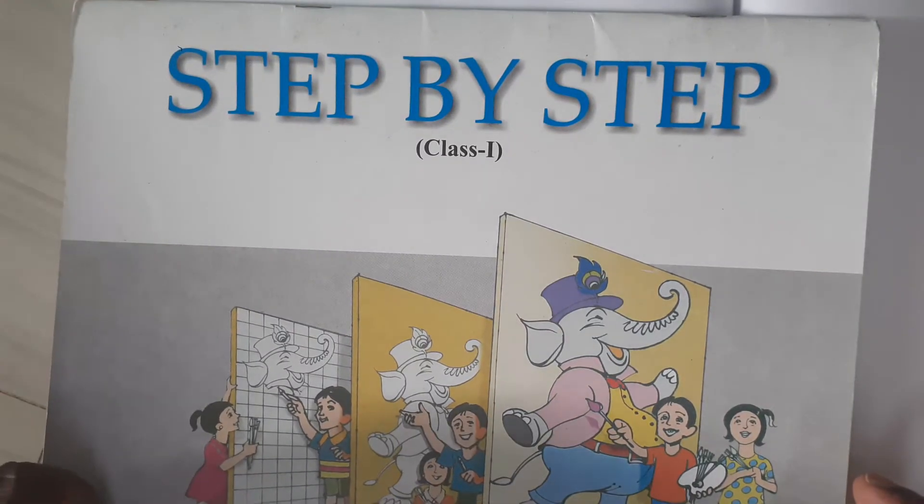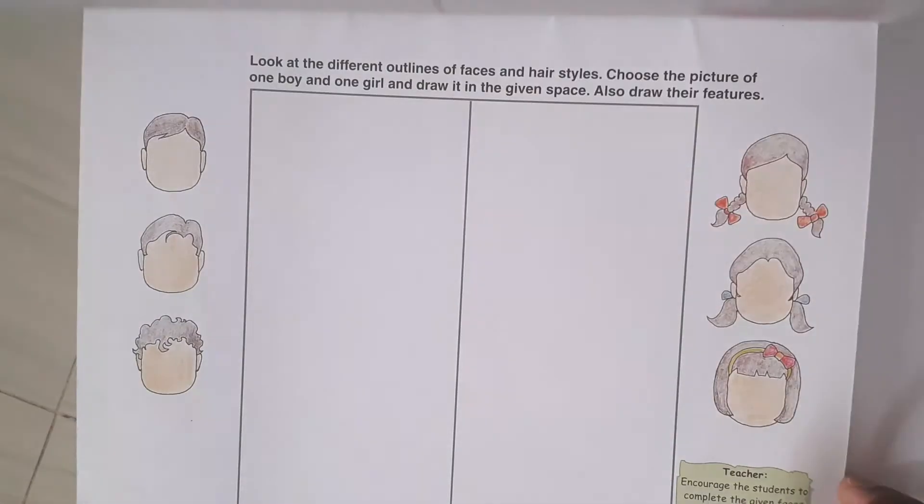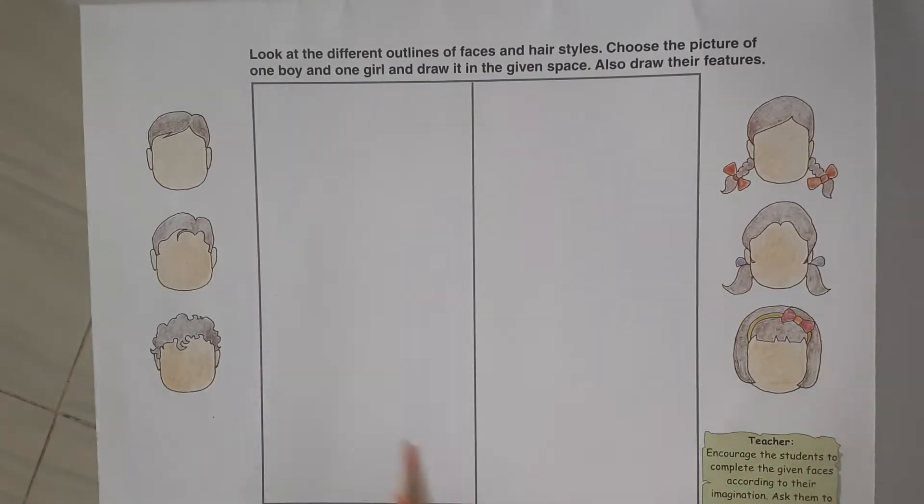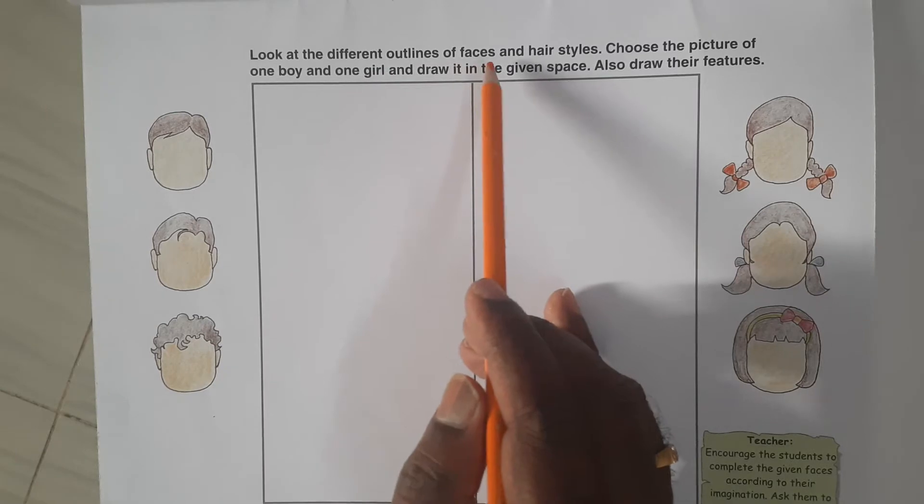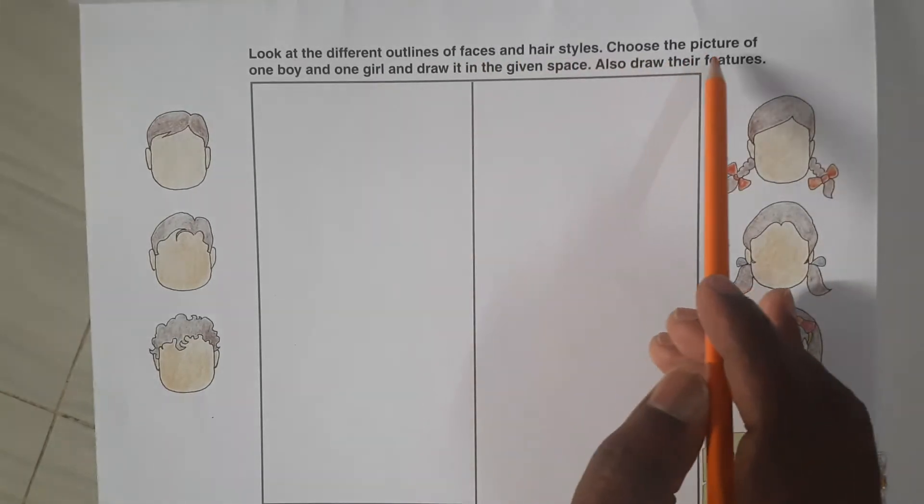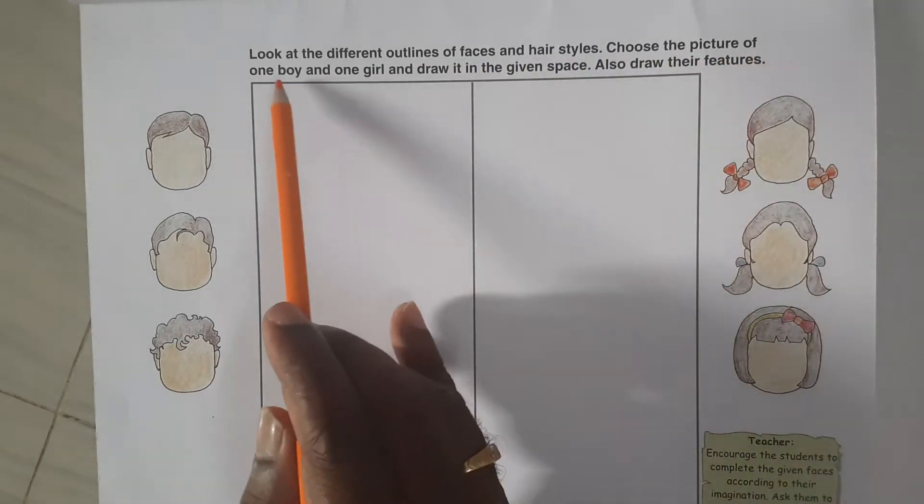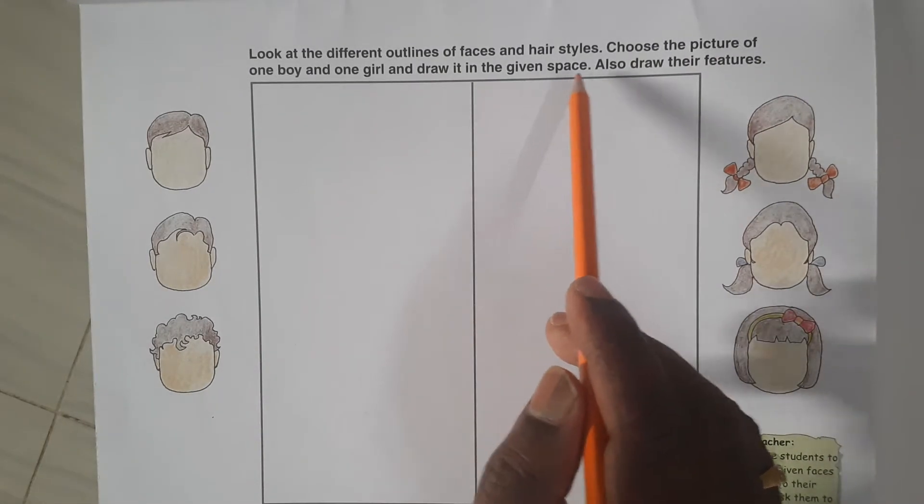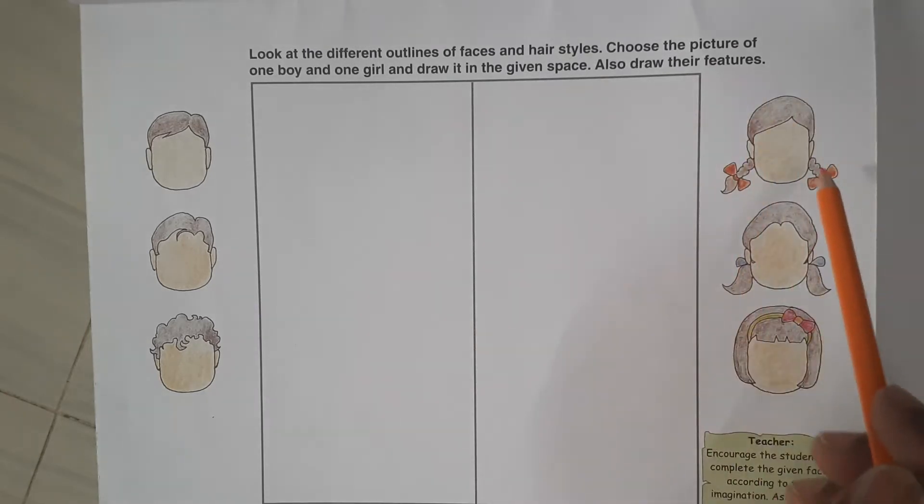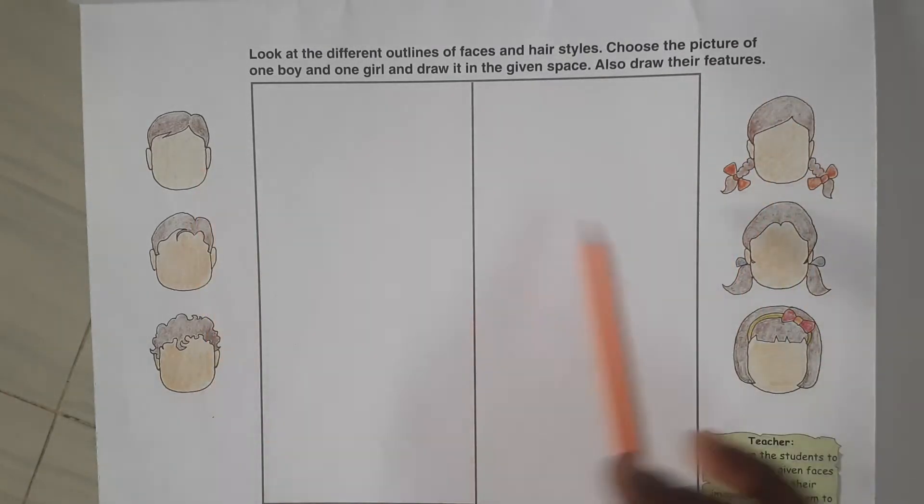Namaste children, welcome back to our art class. Today we will do page number 29. Look at the different outlines of faces and hairstyles. Choose the pictures of one boy and one girl and draw it in the given space. Also draw their features. Okay, here boy, here girl. Let's start the drawing.